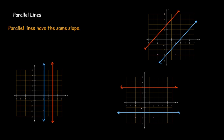Horizontal lines, if they're parallel to each other, their slope is zero.